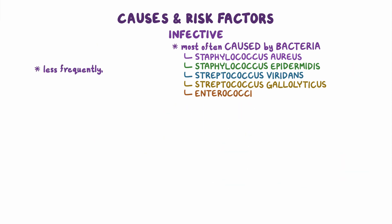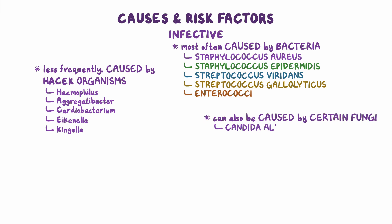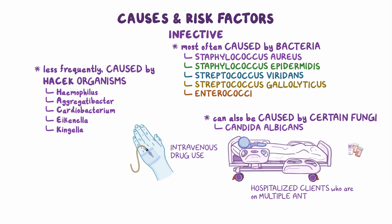Less frequently, infective endocarditis can be caused by the HACEK organisms, which include the bacteria Haemophilus, Aggregatibacter, Cardiobacterium, Eikenella, and Kingella. Finally, infective endocarditis can also be caused by certain fungi like Candida albicans. This happens mostly with intravenous drug use or in hospitalized clients who are on multiple antibiotics.